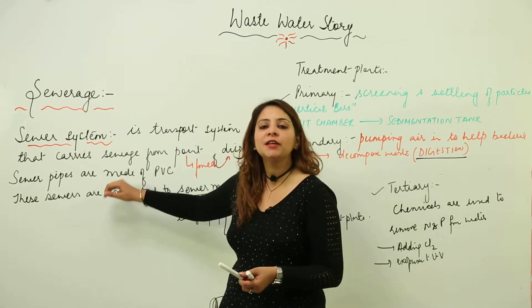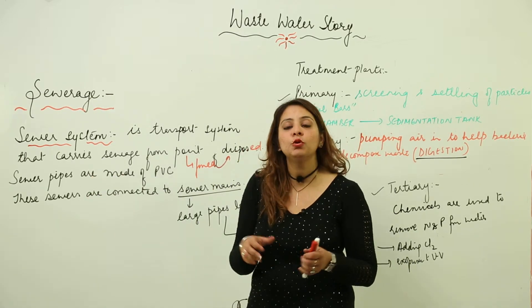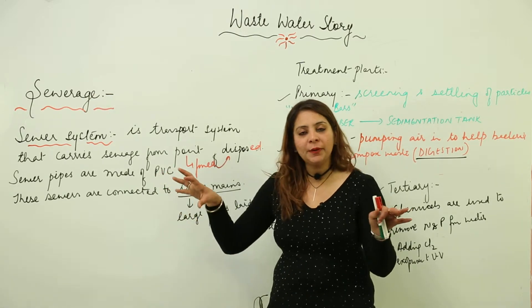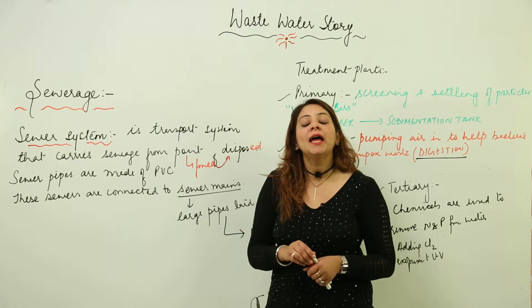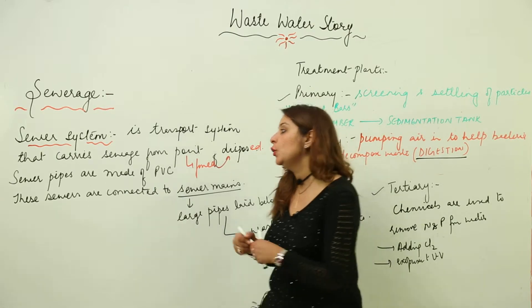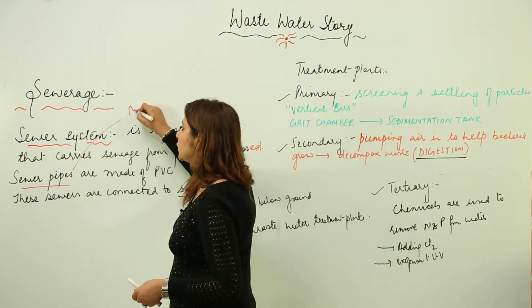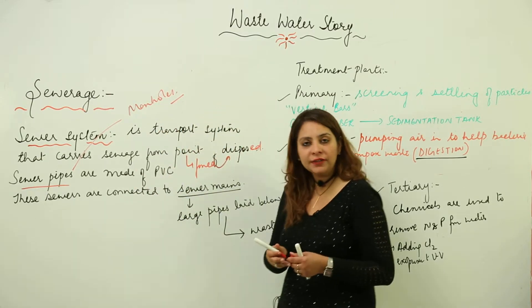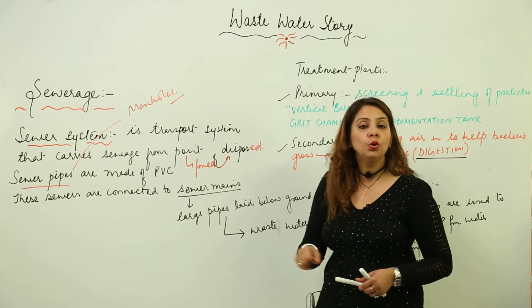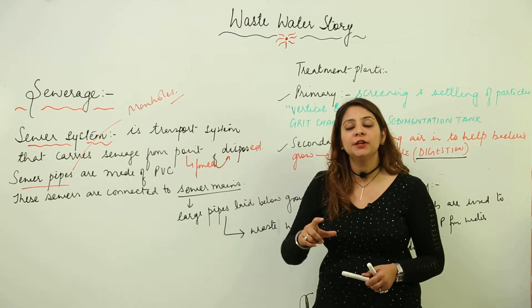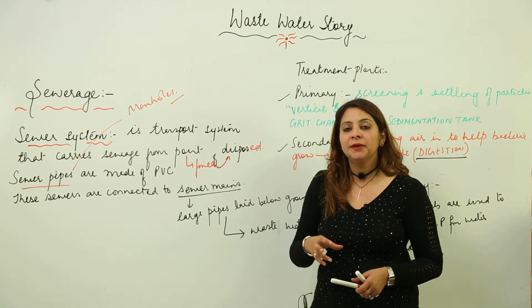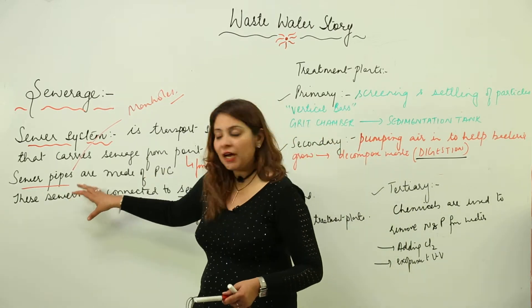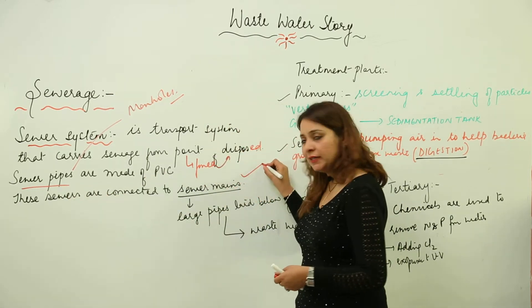These pipes are made up of PVC and they are mostly underground pipes. There are a lot of sewer pipes running underground, and they are also provided with manholes. These manholes are spaced 50 to 60 meters apart, from where repair work can be done. These sewer pipes are connected to the sewer mains.